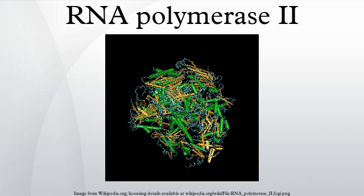RPB8 interacts with subunits RPB1 through RPB3, 5, and 7. RPB9 contributes to the groove in which the DNA template is transcribed into RNA, alongside RPB1. RPB10, the product of gene POLR2L, interacts with RPB1 through RPB3 and RPB5, and strongly with RPB3.